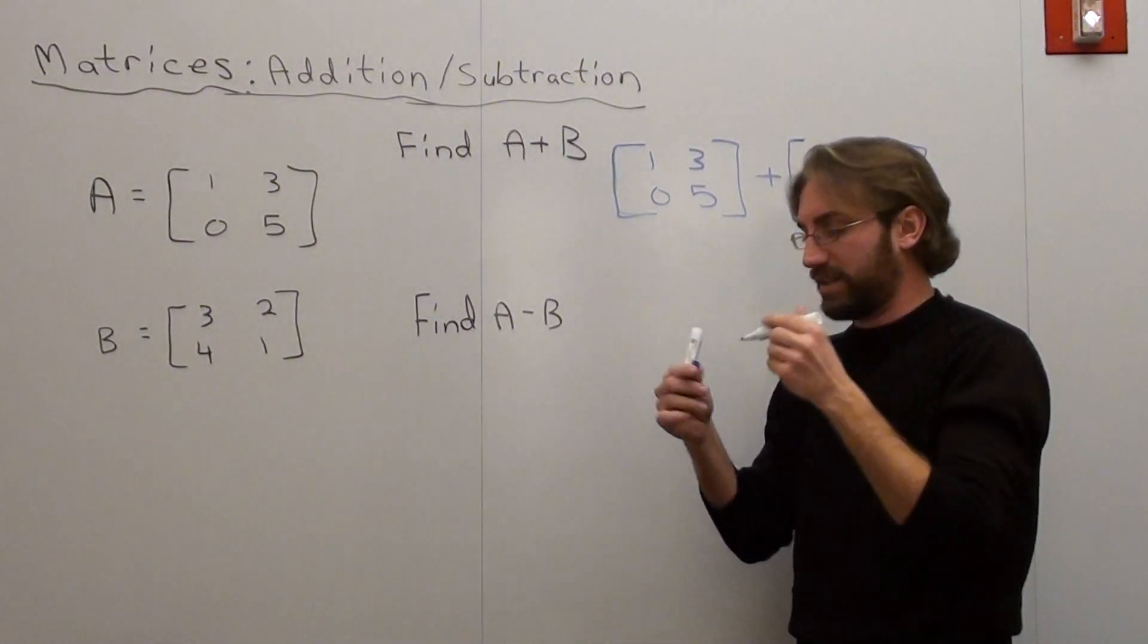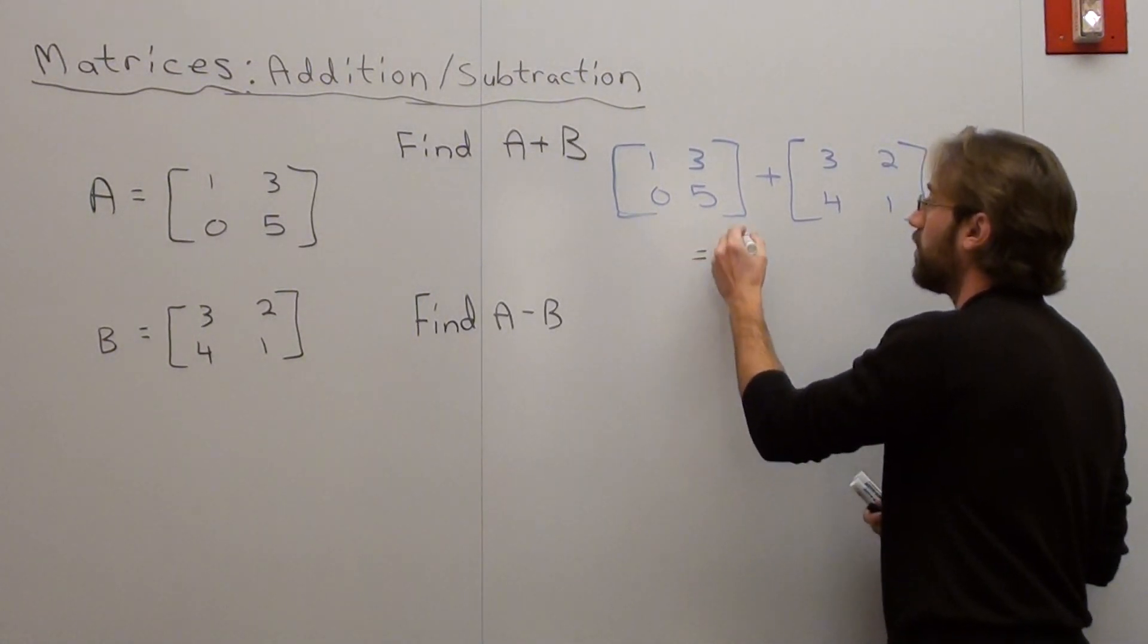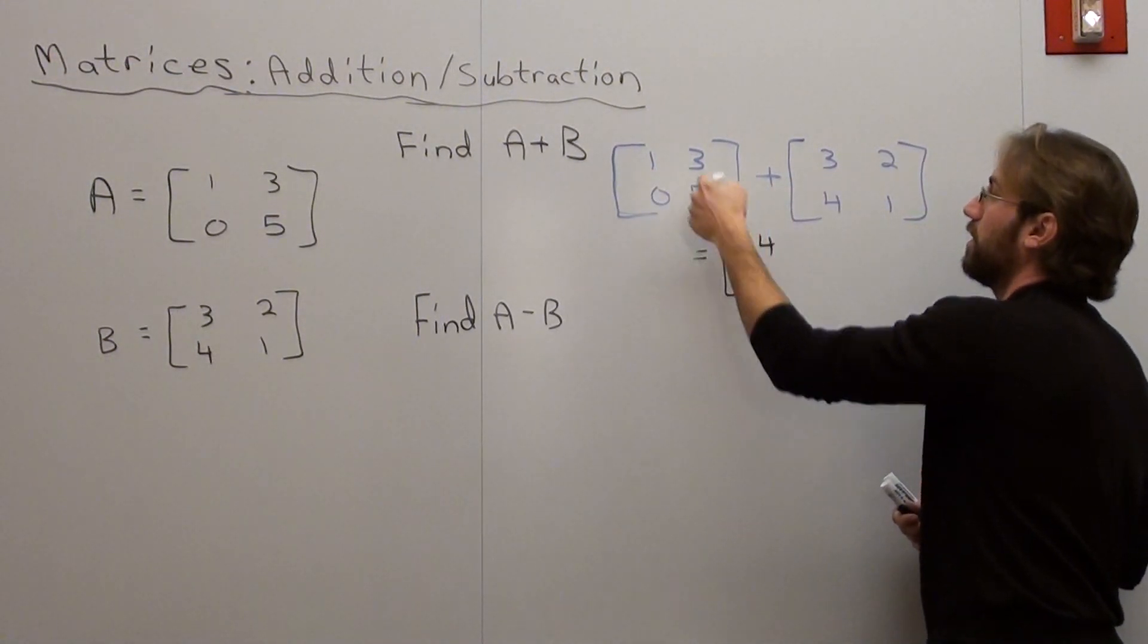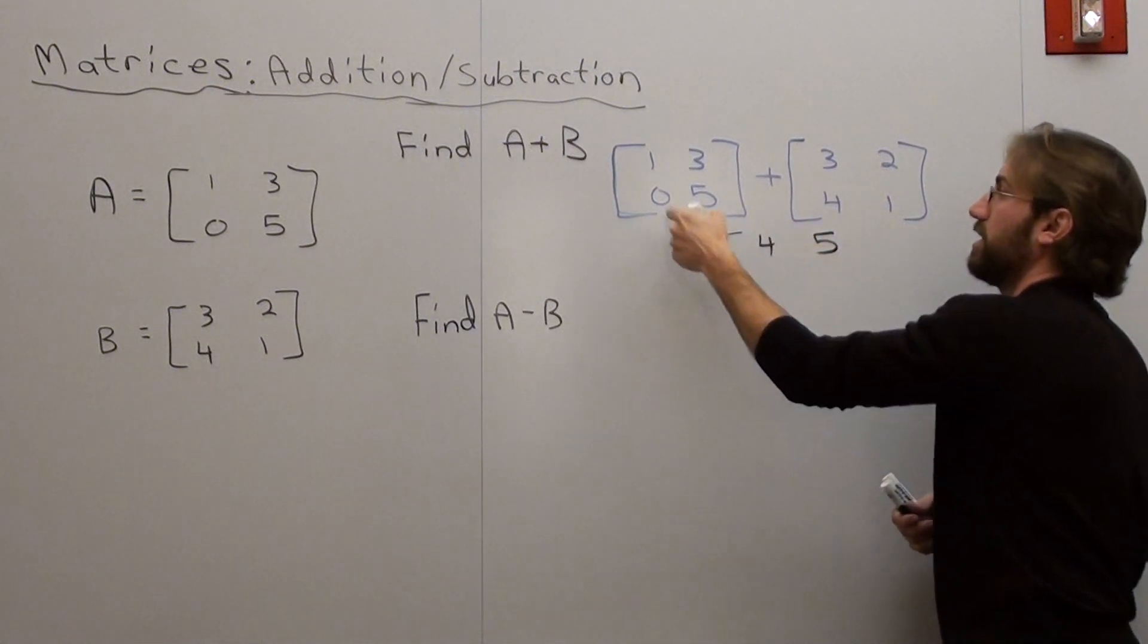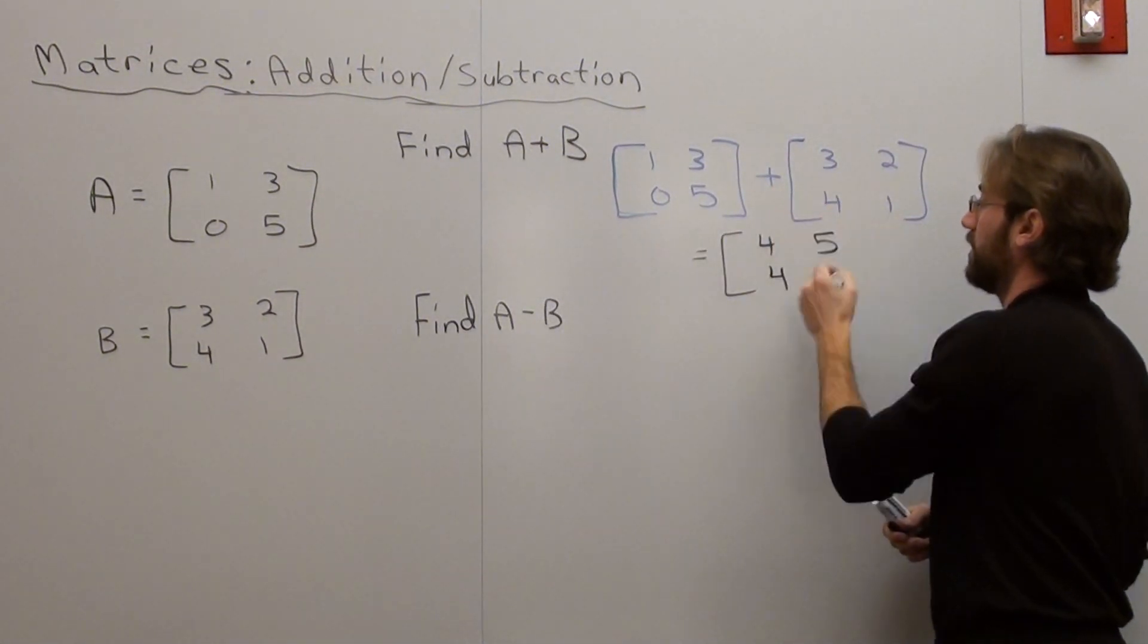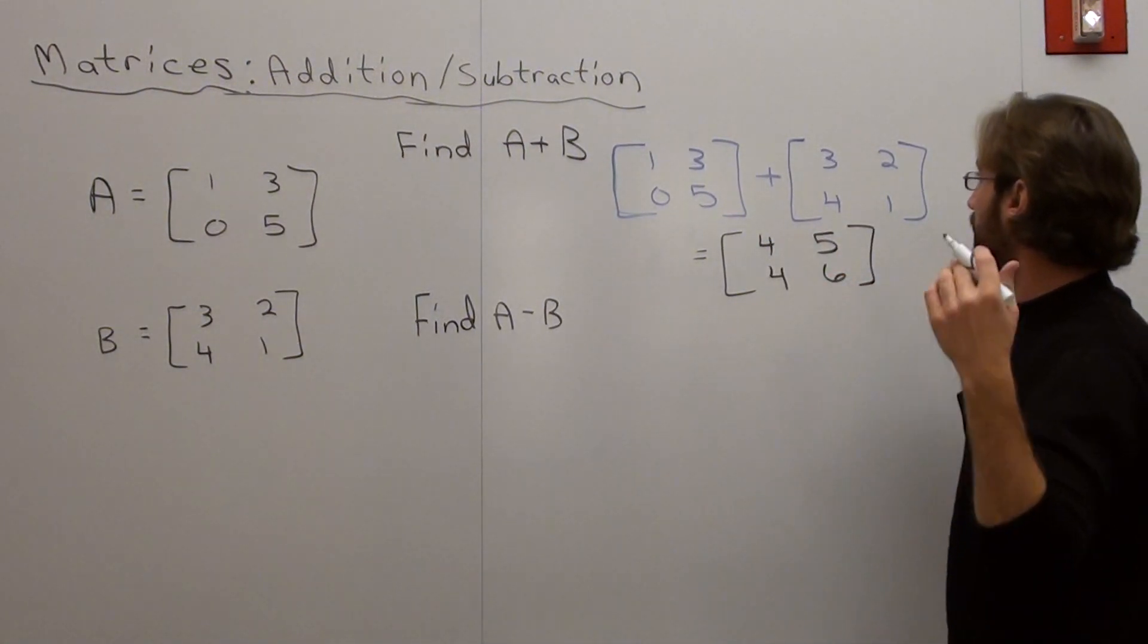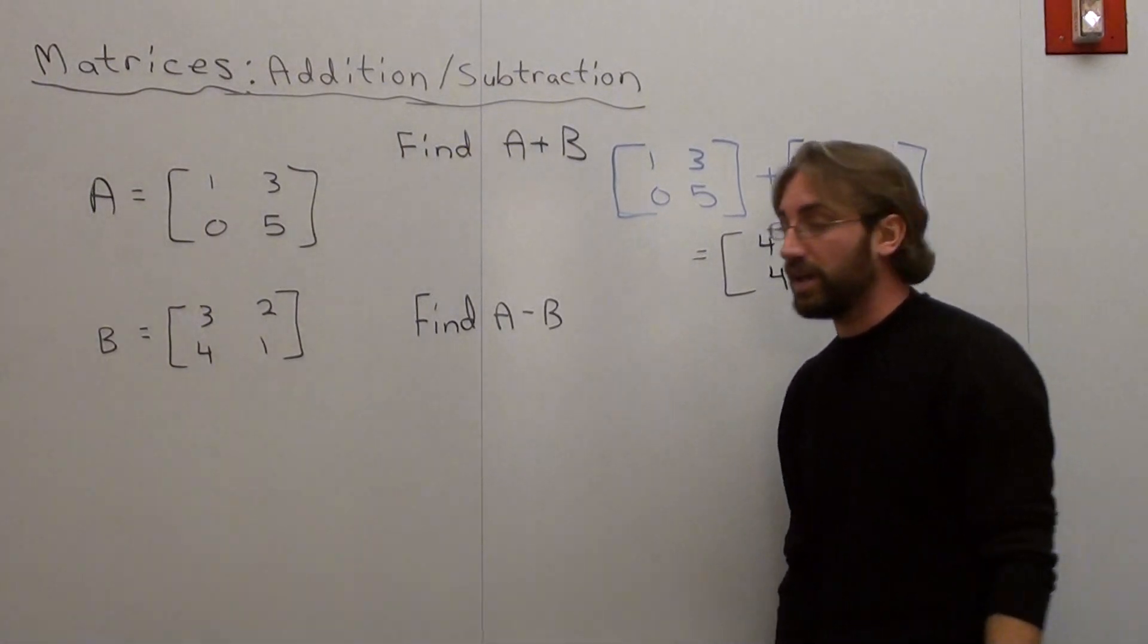Here's the mathematics that's involved with it. Not terribly difficult at all. That equals 1 plus 3, 4. 3 plus 2, 5. 0 plus 4, 4. 5 plus 1, 6. Let me make sure I didn't add that incorrectly. No, it's perfect. Very good. That's the answer.